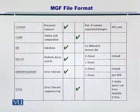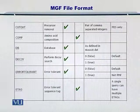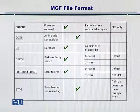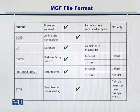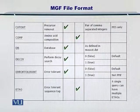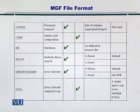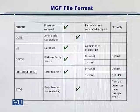The error tolerance attribute allows you to specify if your search is error tolerant — you can accept some plus or minus mass in the search. Next, the E-tag, or error tolerant sequence tags: the sequence tags reported by the search may contain slight deviations which you can tolerate by setting this attribute.